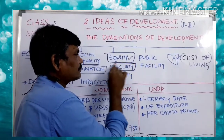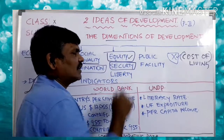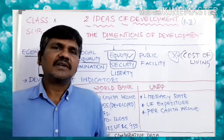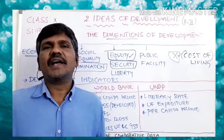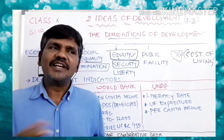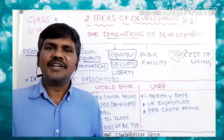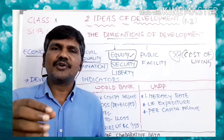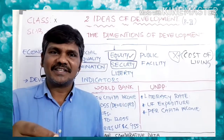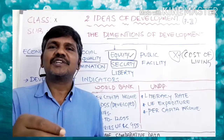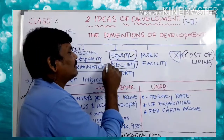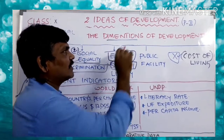Next dimension is security. Some sections of people don't even have security because of lack of nutritious food. In the Telangana region, Anganwadi centers are providing nutritious food for them. So the security dimension is also one of the factors for development.